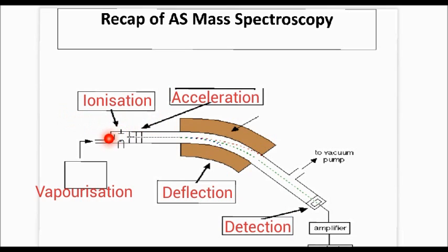After it's been vaporized, it then needs to be ionized. Ionization is where a high-energy beam of electrons is projected in the direction of the sample, and then it knocks off electrons to cause ions. Once you've got the ions, they are then accelerated — made to go a lot faster — towards a positively charged plate. After being accelerated, they then go into a magnetic field, which causes deflection, because charged particles get deflected in a magnetic field. The amount they get deflected depends on their mass-to-charge ratio.